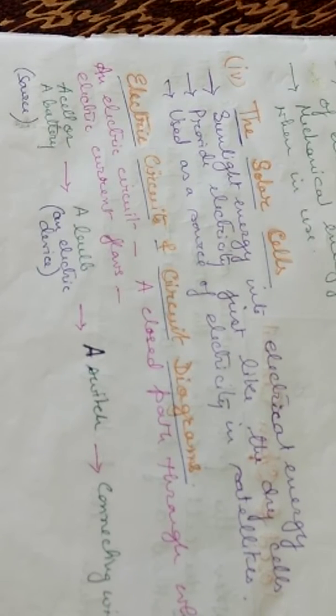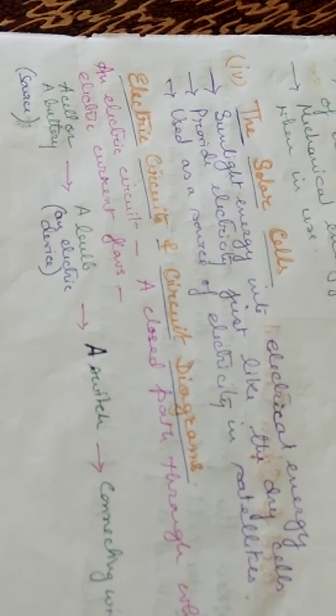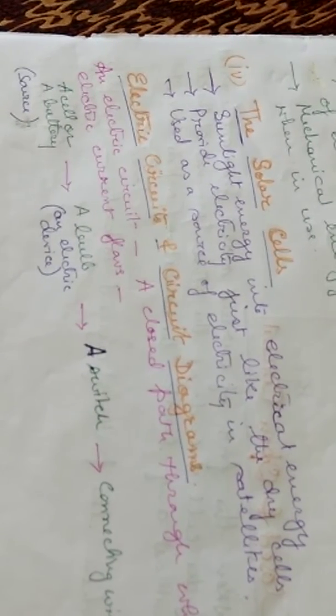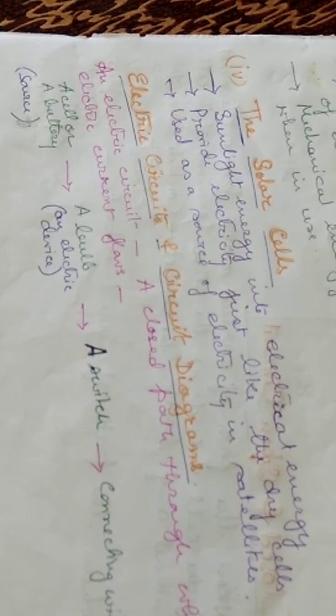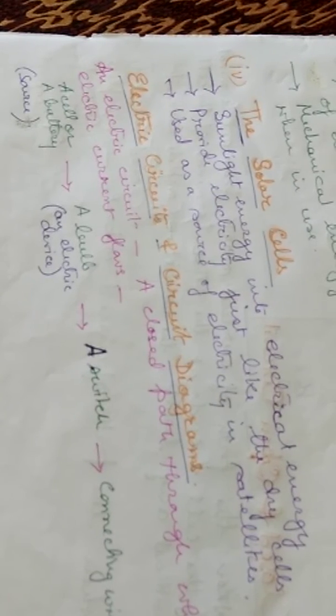Electric circuit is a closed path through which electric current flows. It has a cell or a battery or a source from which the current is generated. Then it is connected to an electric device, maybe it is a bulb. Then it is connected to a switch via the connecting wires.